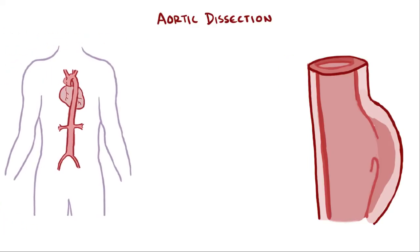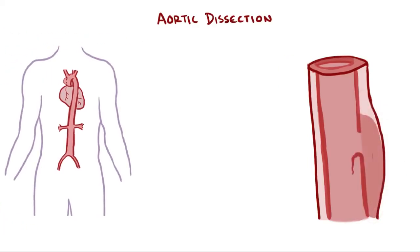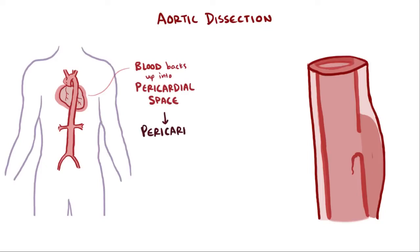Aortic dissections cause a whole whack-load of other problems too. A lot of complications are related to where the blood in the false lumen flows. The blood could flow back up the aorta to the heart and enter the heart's pericardial space, filling it with blood and causing pericardial tamponade, a really, really bad and potentially fatal situation.